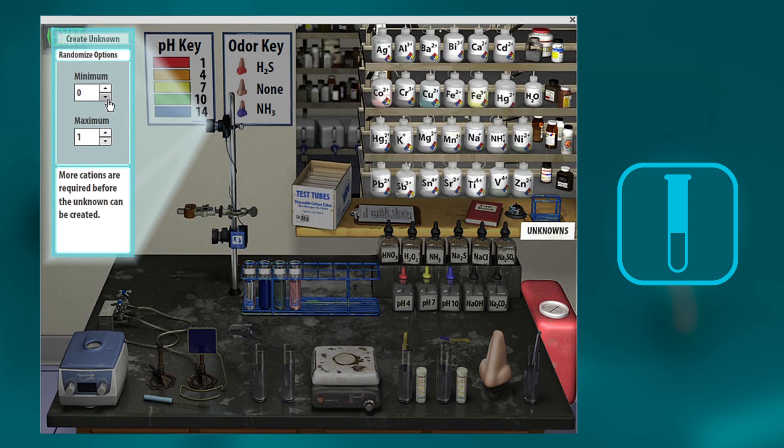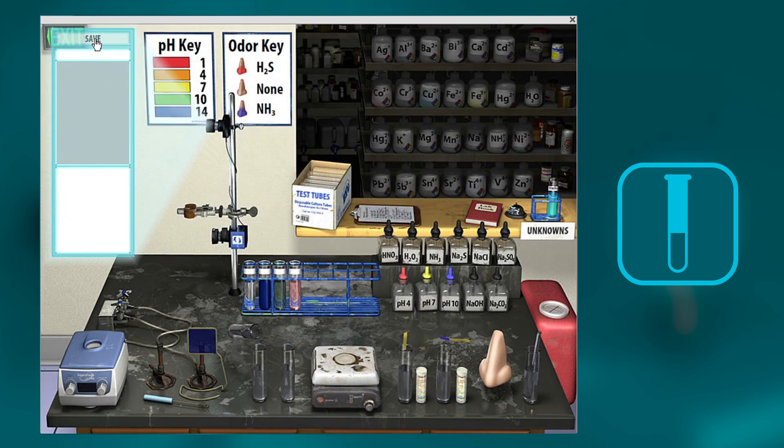So let's say you can have between zero and three cations in there, and we want to say you can do it with cobalt, copper, or nickel. So now this will create an unknown for you so you can practice.